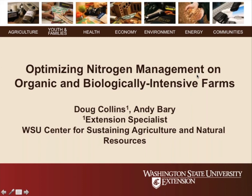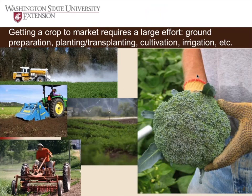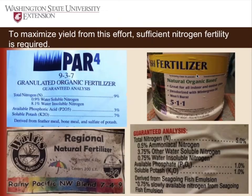Good morning. I'm going to talk about optimizing nitrogen management on organic and biologically intensive farms. To get the most production, organic farmers are investing a tremendous amount of effort into ground preparation, tillage, planting, transplanting, cultivation, irrigation — all of these practices take time and money and resources in order to produce a good crop. So to really maximize or optimize yield from this effort, sufficient nitrogen fertility is required.